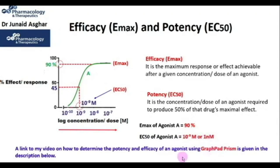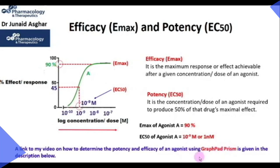You may determine the potency and efficacy of an agonist from your lab experiment by using different computer softwares such as GraphPad Prism.